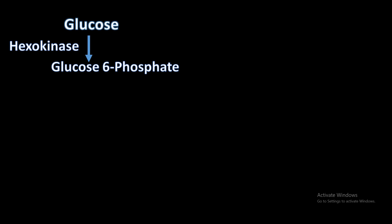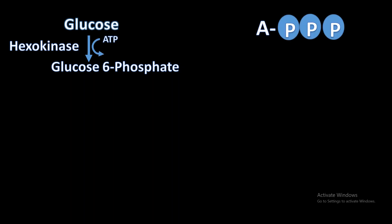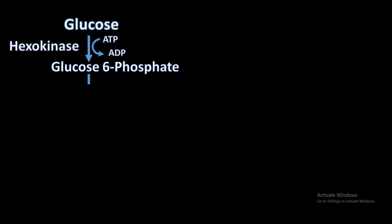Glucose-6-phosphate means phosphate is added to the sixth carbon of glucose in the presence of enzyme hexokinase. The phosphate comes from ATP, which is adenosine triphosphate — a three-phosphate-containing molecule. ATP gets converted into ADP because one phosphate is given to glucose, making it a two-phosphate-containing molecule.